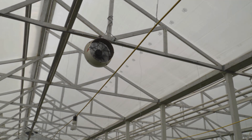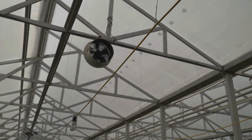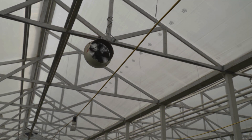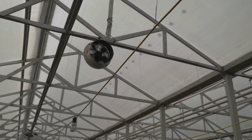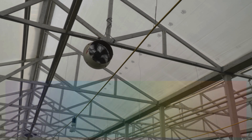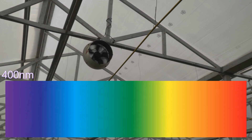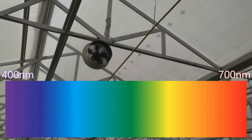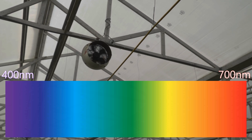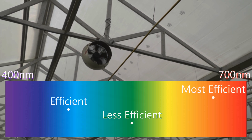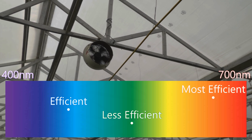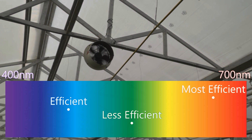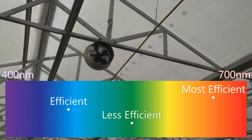PAR only measures the spectrum of light visible to the human eye, which is between 400 and 700 nm. And you can see here which colors are the most optimal, with red being the most efficient, followed by blue and green.